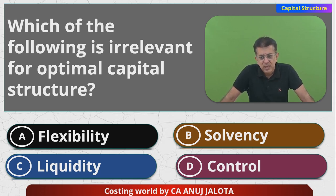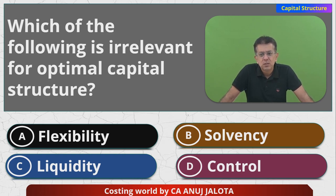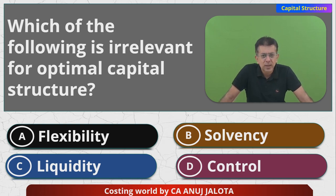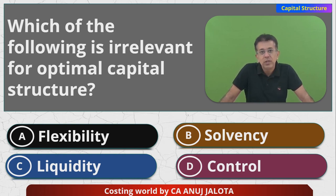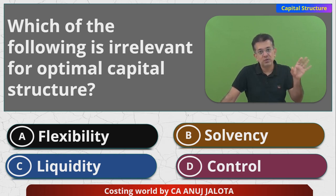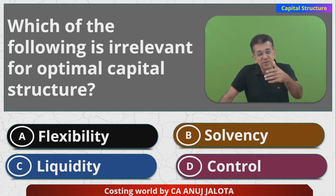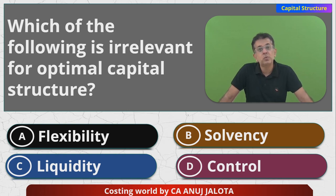Flexibility — do you have an option to repay the capital that you have taken? For example, suppose you issue equity shares and one day you think you don't need the money anymore because internal profits are very high. Can you repay them back? Absolutely not. There could be a buyback, but buyback is a long-drawn process. So flexibility means the ability to repay the capital whenever you want.